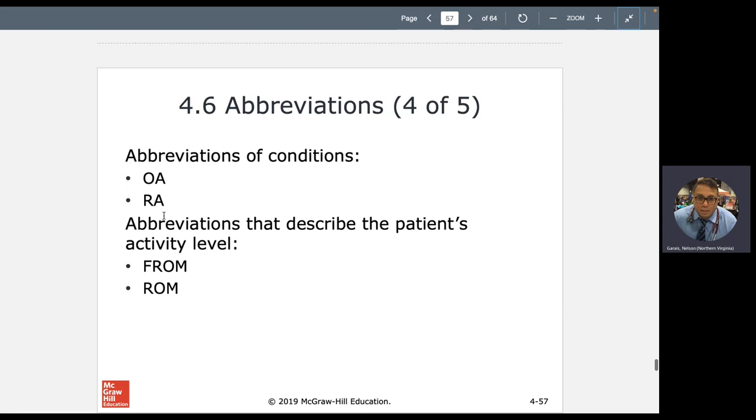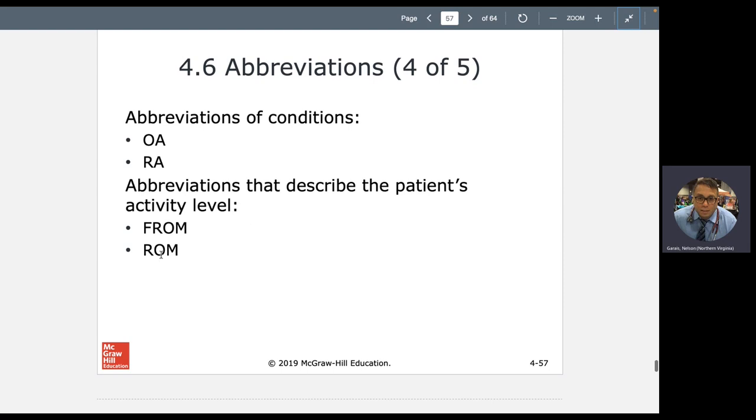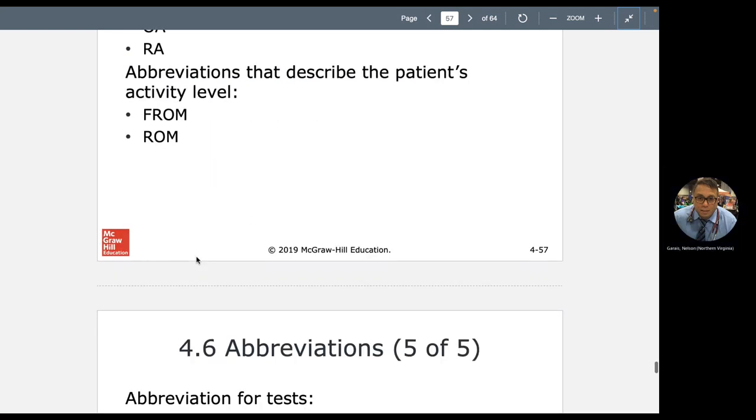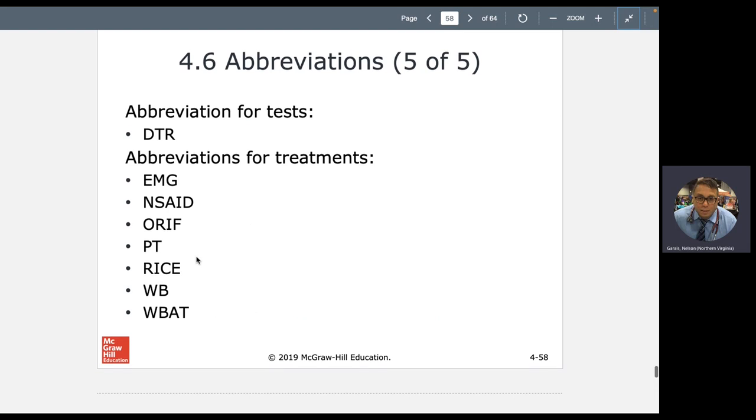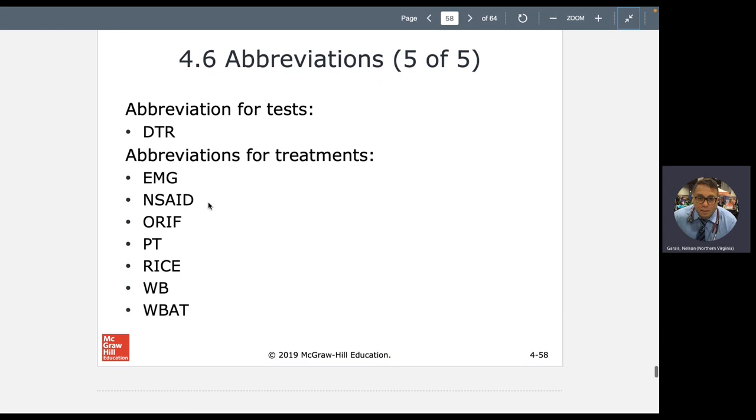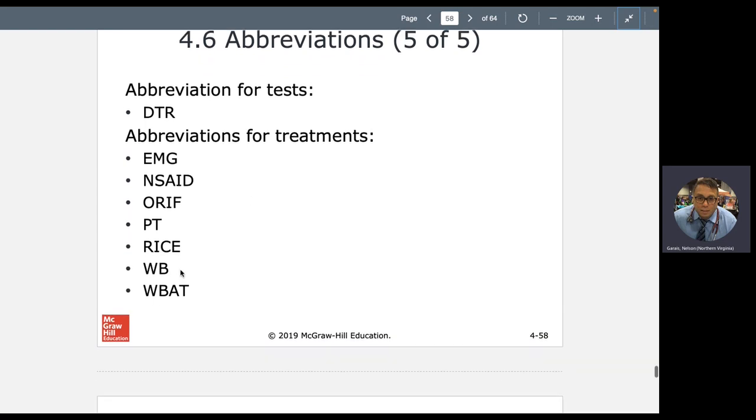Osteoarthritis, rheumatoid arthritis. This is usually slang. ROM is range of motion. FROM is functional range of motion. But we just use ROM. I don't know what DTR is. My brain is not working. But I mentioned NSAIDs, non-steroidal anti-inflammatory drugs, EMG, electromyogram, PT, physical therapy. RICE therapy is rest, ice, and the E is elevation, and C is compression. I don't know the other ones. WB, WBAT, ORIF. Not too common in the internal medicine world. And I don't believe they're too common. But EMG, NSAID, RICE, those are very common.